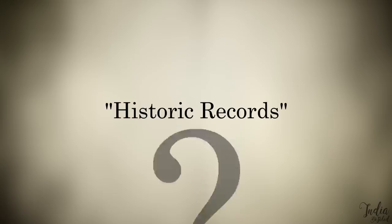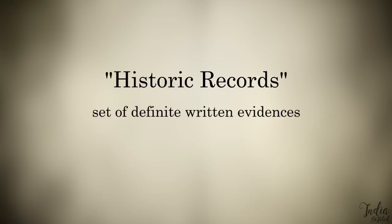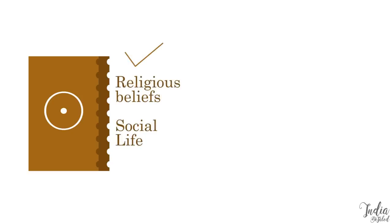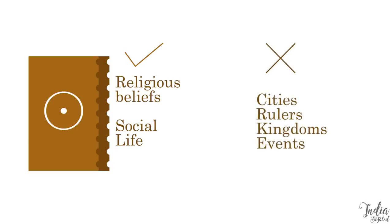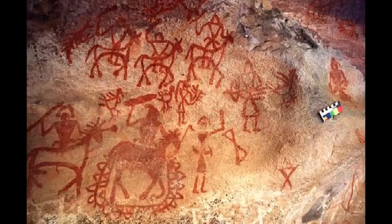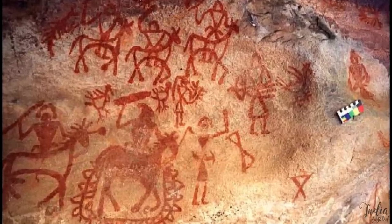Now, what counts as a historic record? These records are in the written form — as an inscription, copper plates, or anything that is readable. Religious scriptures alone do not count as reliable records because, although they might give us reliable information about the religious beliefs and social life of the people of that period, they don't give reliable information about their political situation — their cities, rulers, kingdoms, events, and so on. These paintings too tell us about the daily life of those people but nothing detailed about any particular event.